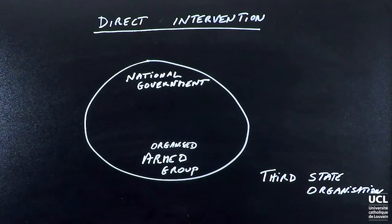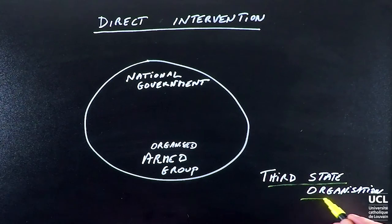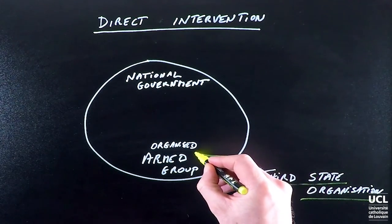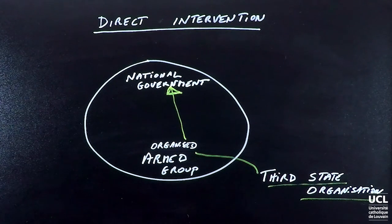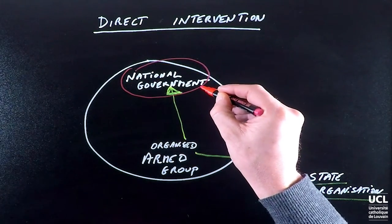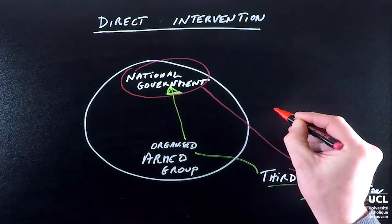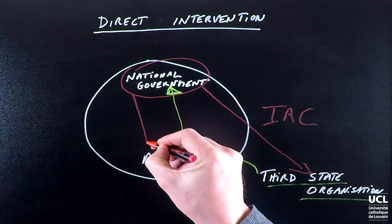The first consequence of this is that, as a matter of law, it is possible for two conflicts to exist in parallel. This scenario will arise when a third state or an international organization intervenes alongside the armed group to fight the national government. In this situation, two conflicts take place at the same time: the first one, involving the national government and the third state, is international in character; the second, involving the national government and the armed group, is non-international.